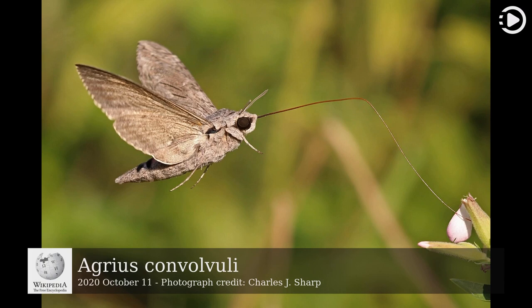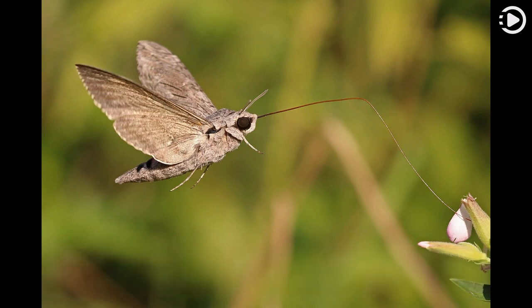Agrius convolvuli, the convolvulus hawkmoth, is a common moth found in Europe, Asia, Africa, and Australasia, in the family Sphinidae.